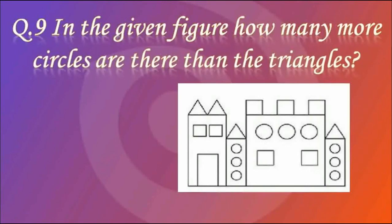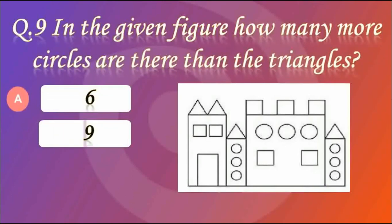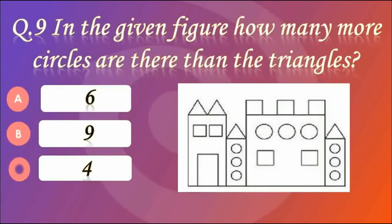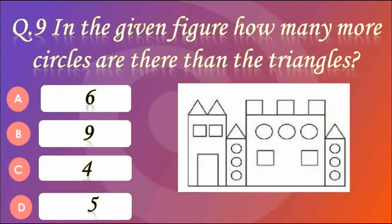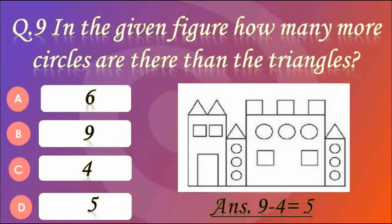Question number 9. In the given figure, how many more circles are there than the triangles? Options are 6, 9, 4, and 5. Answer — 5. The total number of circles is 9 and the total number of triangles is 4. When we subtract 4 from 9, we get how many more circles there are than triangles — that is 5. Option D is correct.